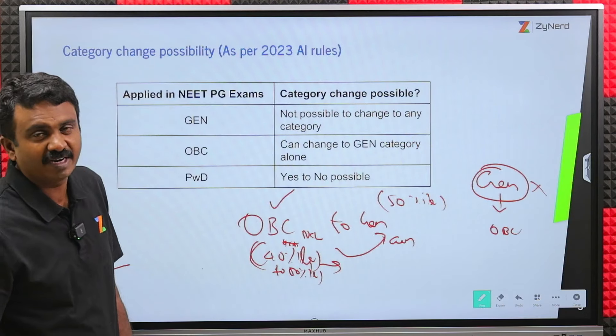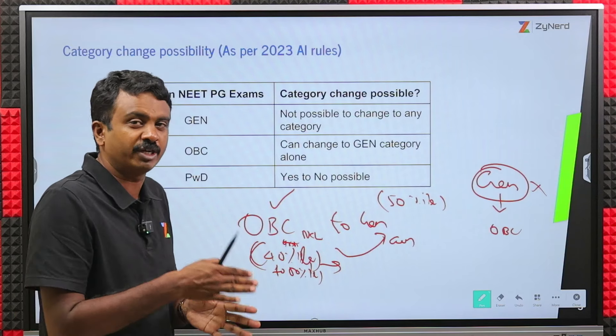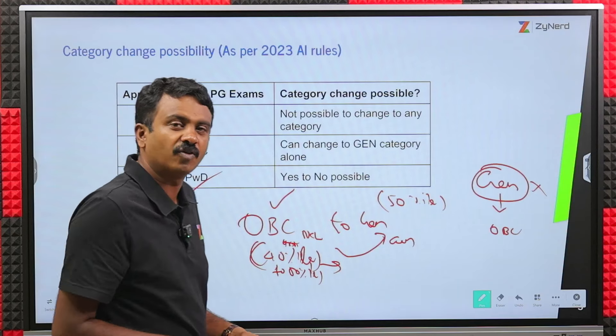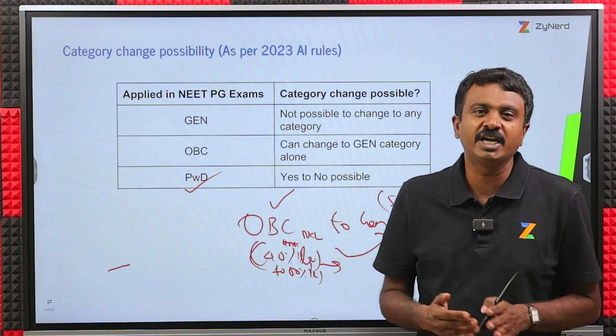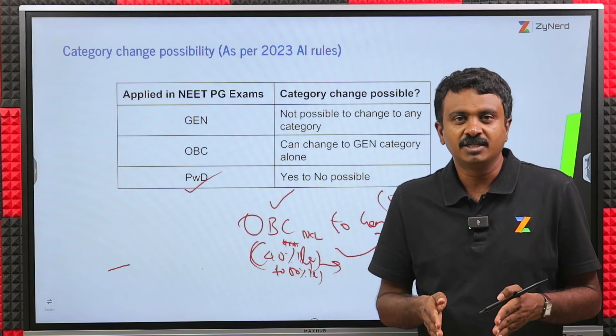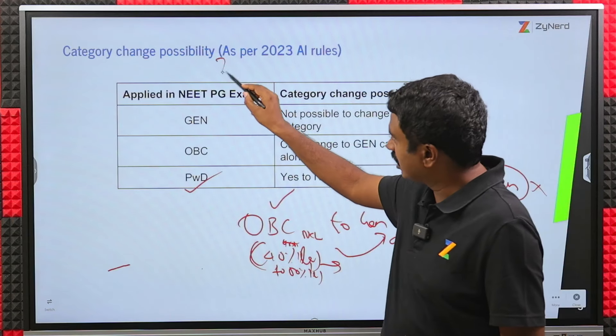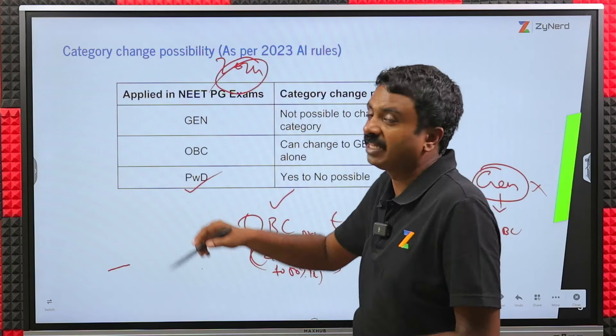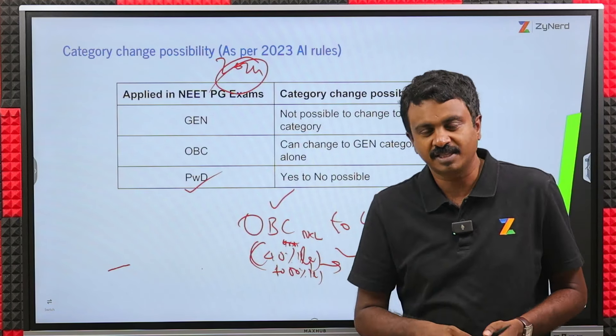Just call us. We will let you know how that works out. If you are confused about this, call us if you are between 40 to 50 percentile. Otherwise it is straightforward. You can change from any category to Gen, but Gen to any category is not possible. You can change from PWD yes to no, but PWD no to yes is not possible. Always look at 2024 again when the registration starts and check this and then go ahead if there are any changes. Thanks a lot for watching.